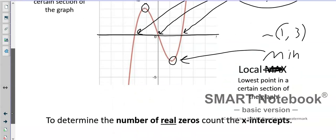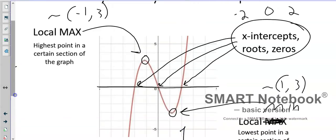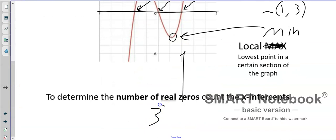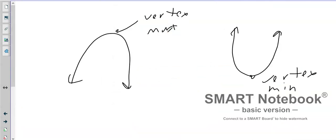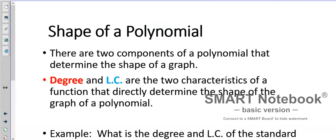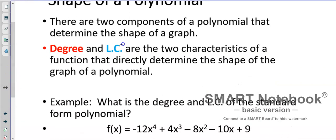All right? So determine the number of real zeros. Count the x-intercepts. So that would be, number of real zeros is three. All right. Let's talk about the shape of the polynomial. There are two components of a polynomial that determine the shape. The degree and the LC. We talked about this before. Remember, LC is the lead or leading coefficient. It's the number in front of the highest degree, x.